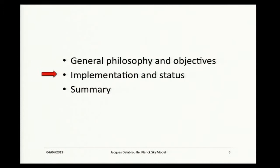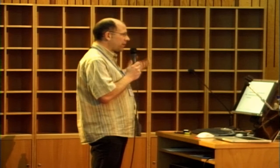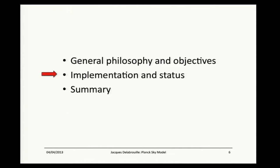Let me move on to implementation and status. Over the past few days I've been asking myself how to best give an overview of the different possibilities implemented in the Planck sky model, given that for each component it's possible to pick between different options — Gaussian or non-Gaussian CMB, synchrotron described with fixed or varying spectral index, or maybe running, etc. The answer struck me as obvious: it's just not possible to do that within this talk. I encourage you to check the PSM paper for details. What I will describe is the specific changes implemented for the FFP6 simulations that have been mentioned to you already a few times.